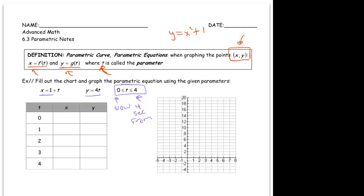When t is 0, x is 1. When t is 1, x is 2, 3, 4, and 5. And when t is 0, y is 0. And then when it's 1 it's 4, 8, 12, and 16.